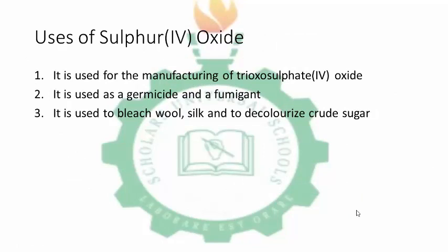SO2 is used for the manufacturing of sulfurous acid (H2SO3). It is also used as a germicide and as a fumigant. It is also used to bleach wool, silk and to decolorize crude sugar. SO2 is also very important in the Contact Process, which we will discuss when we talk about sulfuric acid H2SO4.